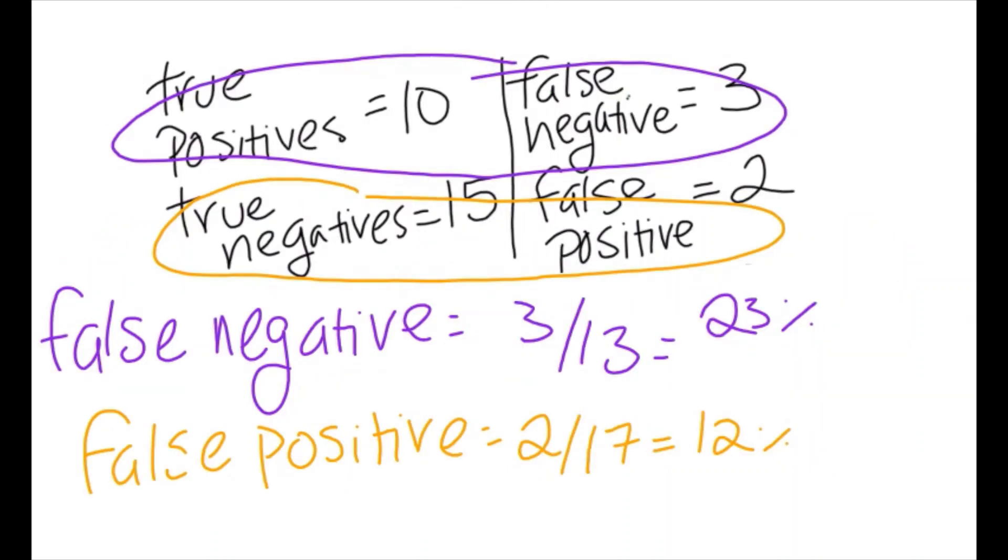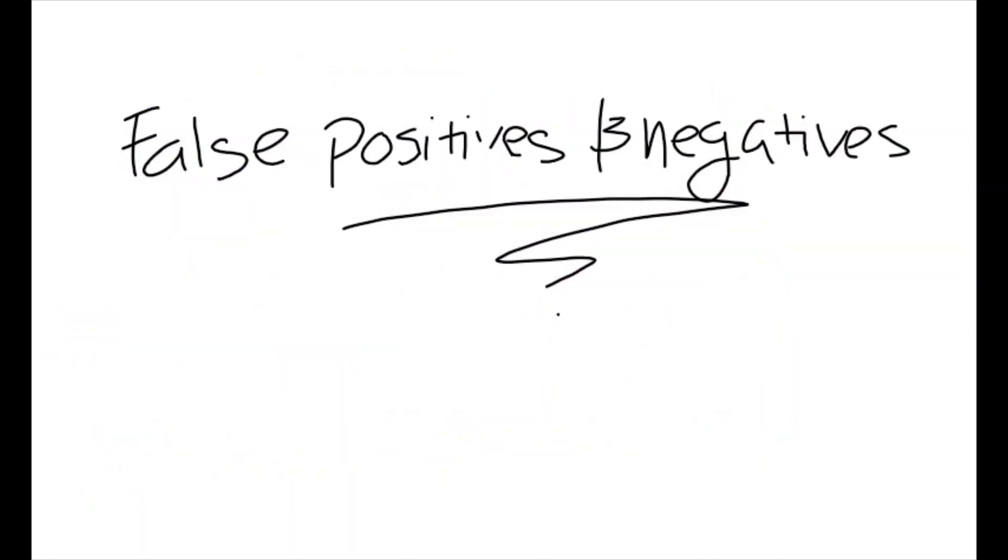Calculating each rate, we see that our false negative rate is around 23%, and our false positive rate is around 12%. I hope this video helped you to understand more about false positives and false negatives, and how we can calculate different tests' accuracy and error rates.